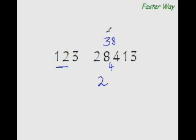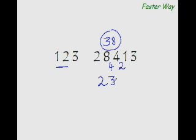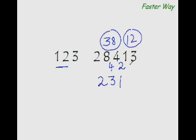12 goes into 38 how many times? 12 times 3 is 36, so write 3 here and the remainder is 2. This becomes 21. Our new dividend would be 21 minus 3 times 3, that is 9, so 21 minus 9 is 12. 12 goes into 12 one time, so write 1 here and the remainder is 0.